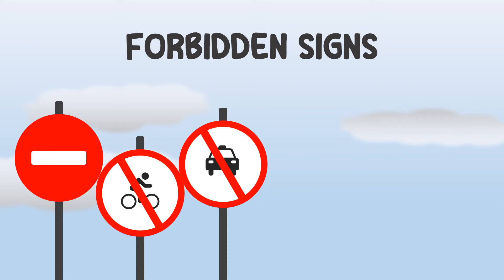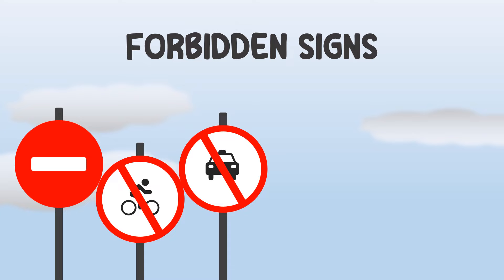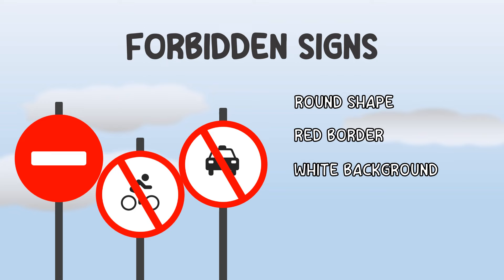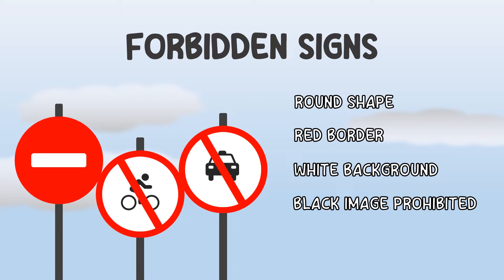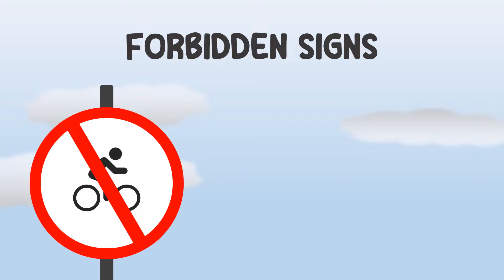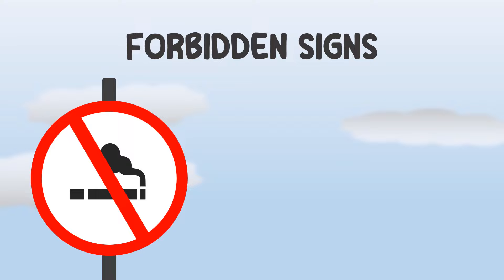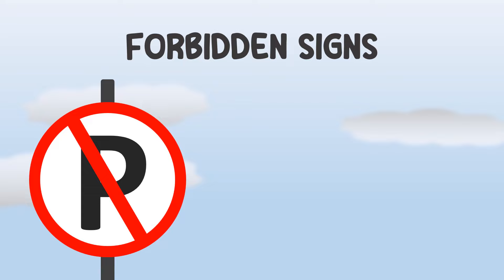Forbidden signs are round, have a red border and white background, and the picture in the center with black color is what is prohibited. For example: no entry, no bike, no car, no smoking, no camera, no parking, and no U-turn.